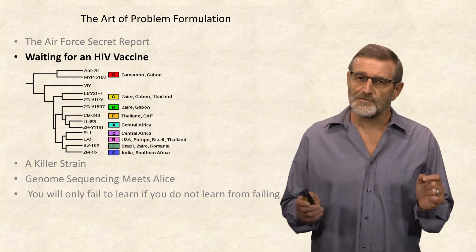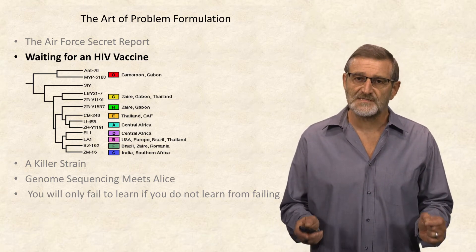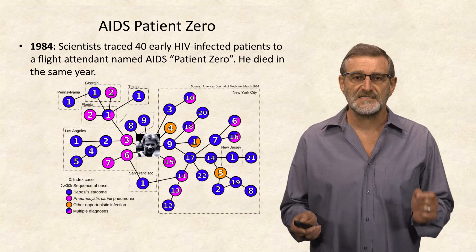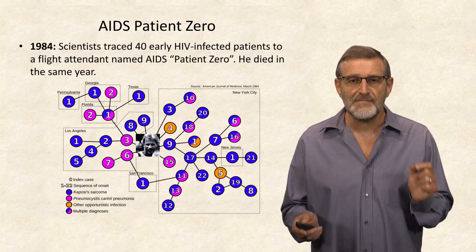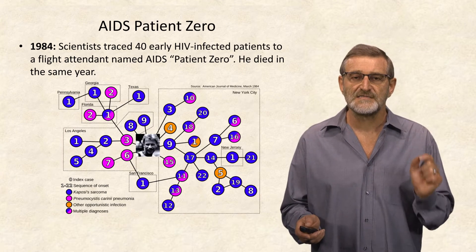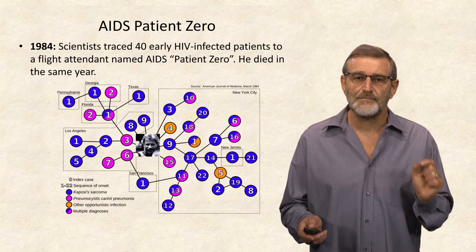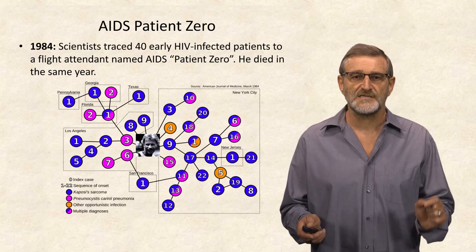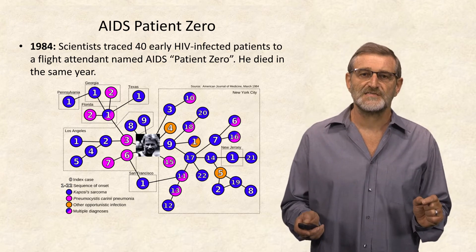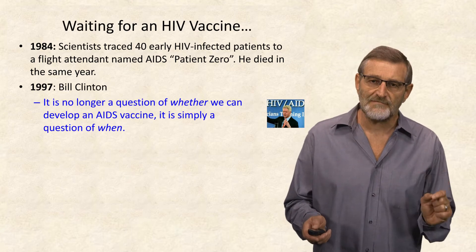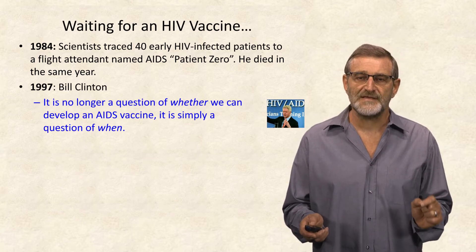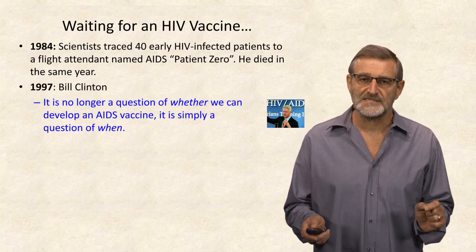We will now talk about the efforts to develop an HIV vaccine that started immediately after scientists identified the AIDS patient zero and constructed the first HIV transmission tree. However, developing an AIDS vaccine proved to be a difficult task.